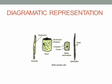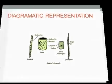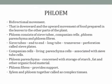Xylem fibers are thick-walled, long, narrow cells with tapering ends; they provide only mechanical support to the plant. Xylem fiber is also called xylem sclerenchyma. The main function of xylem is to transport water and mineral salts from the roots to the aerial parts of the plant, and to give mechanical strength and support to the plant.